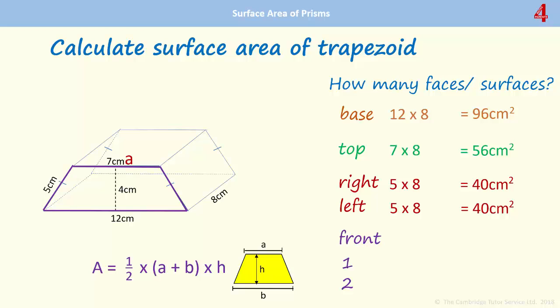So if we call the top of this trapezium a and the base b, we add those together: 7 add 12, that's 19. Now we multiply that by the height which is 4. 19 times 4, that's 76. And now we divide that by 2, which is 38. So the area of that trapezium is 38 centimeters squared, and remember there's another one at the back that's exactly the same.